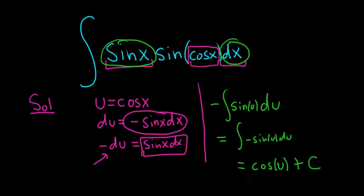And then we said u was cosine x, so this is cosine of the cosine of x, fun stuff, plus our constant of integration, capital C.